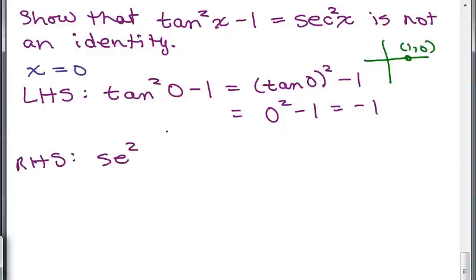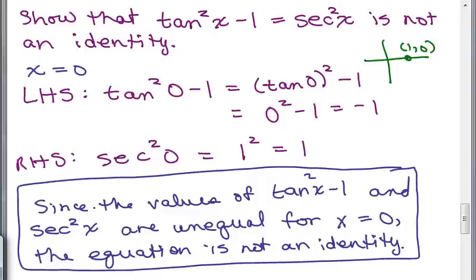For the right-hand side: sec²(0). The secant is the reciprocal of the cosine, and the cosine of 0 is 1 — it's the X coordinate. The reciprocal of 1 is still 1, so this is 1 squared, which equals 1. Notice the left-hand side gave negative 1 but the right-hand side gave 1, so we did not get the same thing. Since the values of tan²X minus 1 and sec²X are unequal for X equals 0, the equation is not an identity.